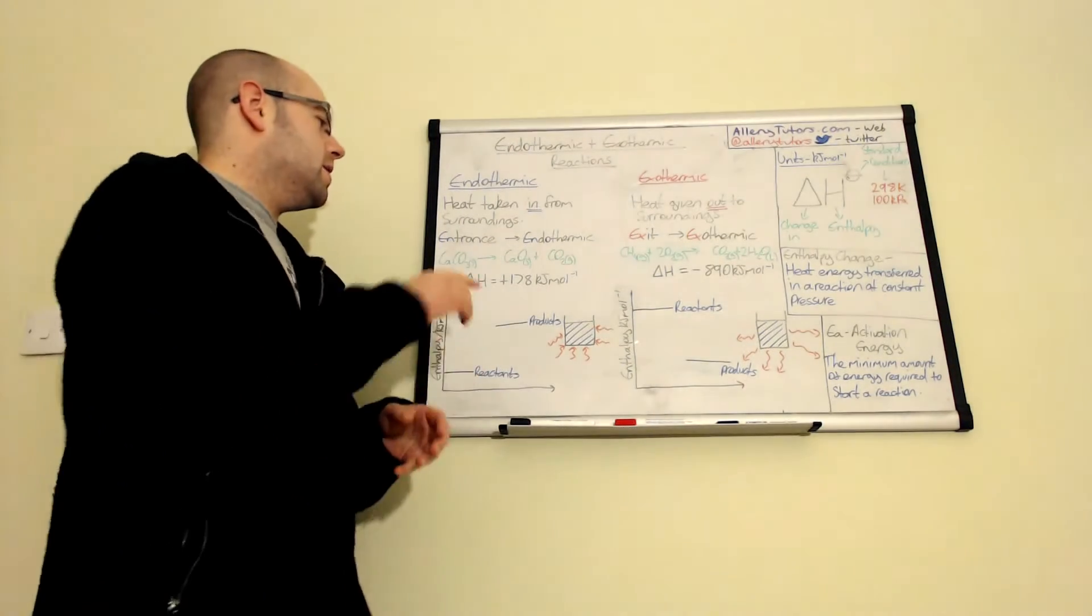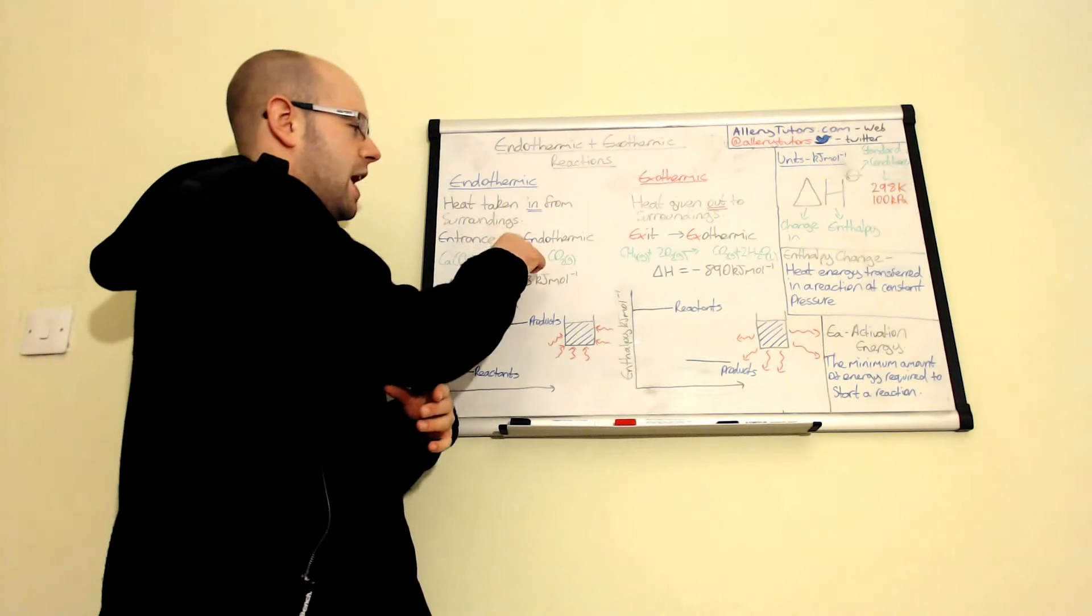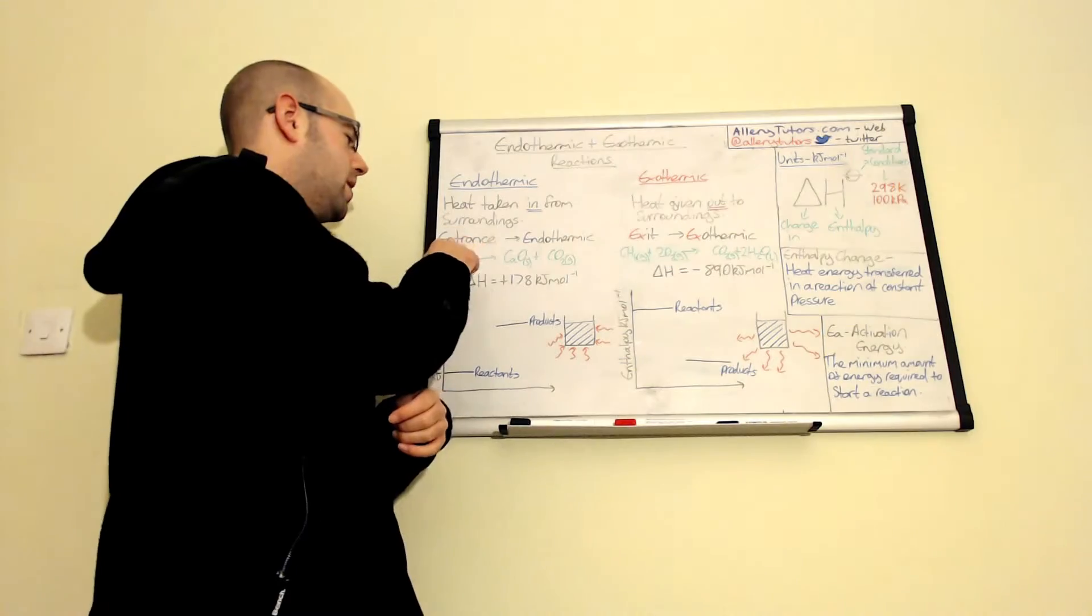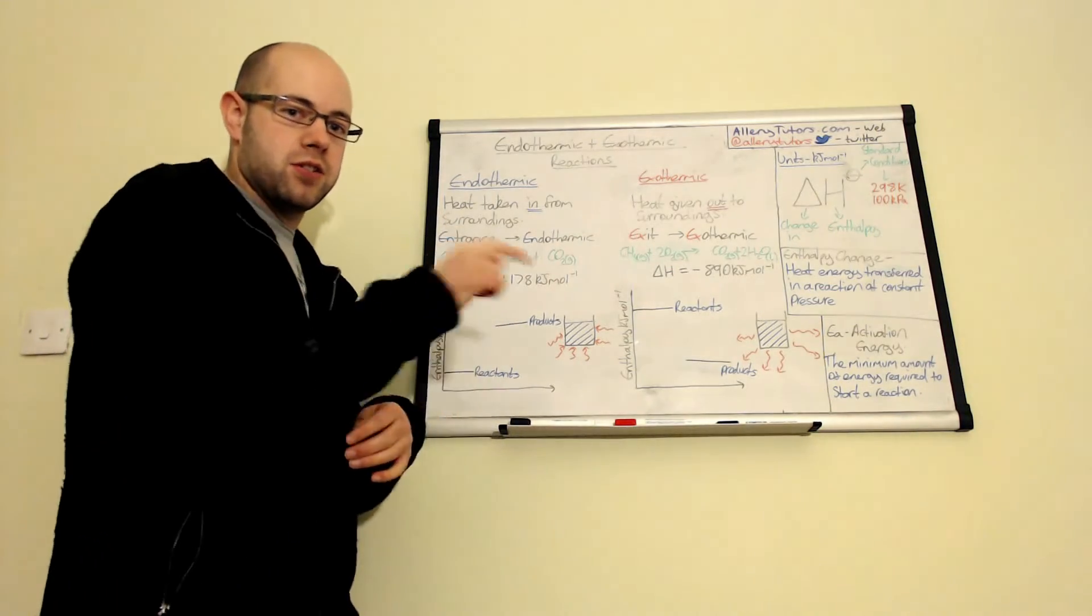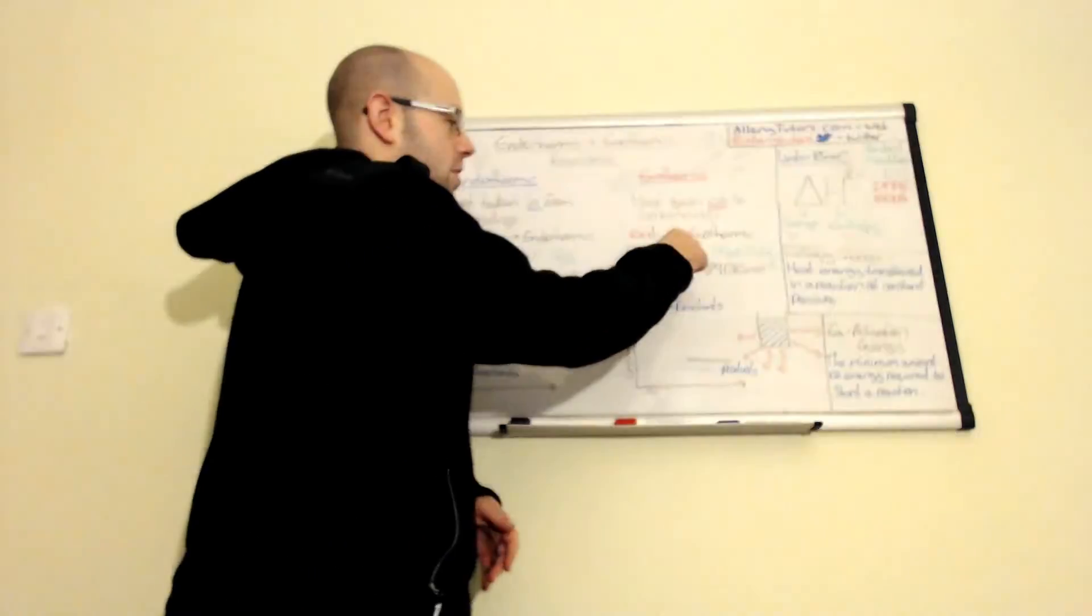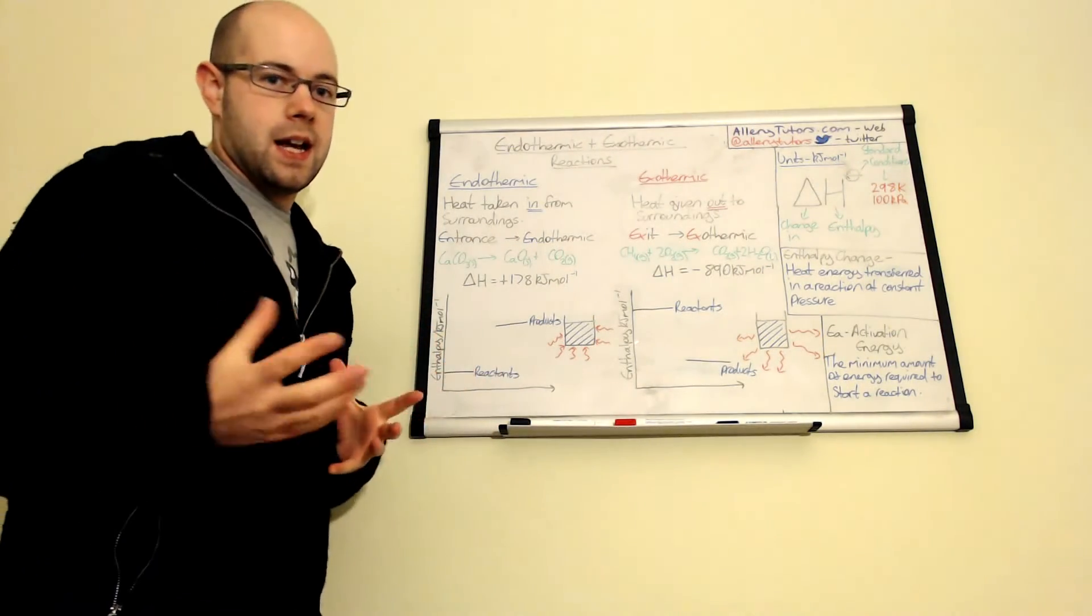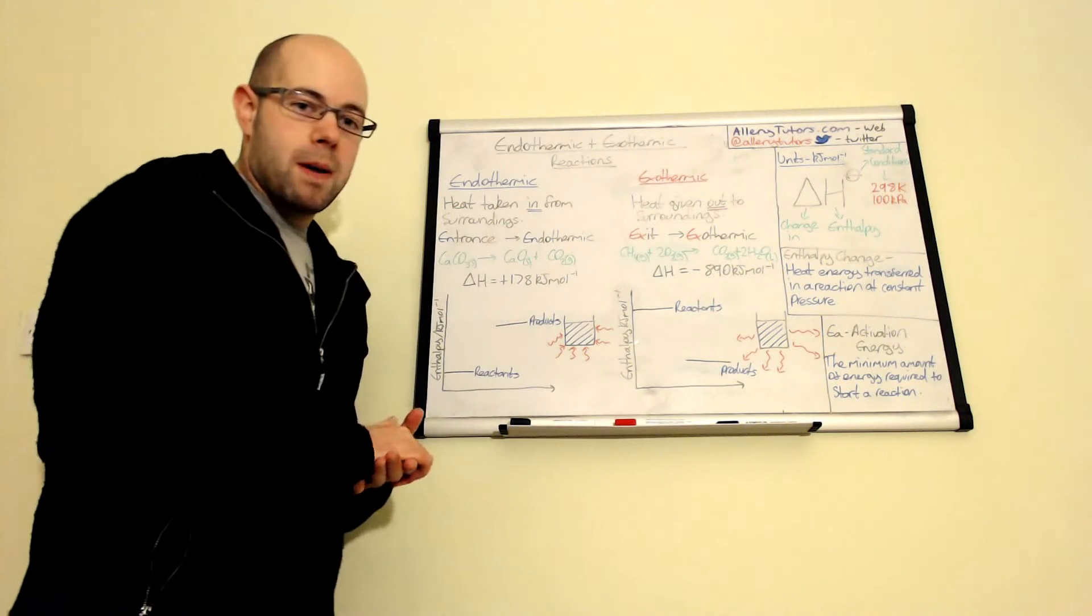You can probably remember this by using this here. Imagine endothermic is where it's taking heat energy in. So the endo can be the same as entrance, as in to go into somewhere. And exothermic, meaning exit, means to leave or to lose heat energy. That might help you to remember the two.